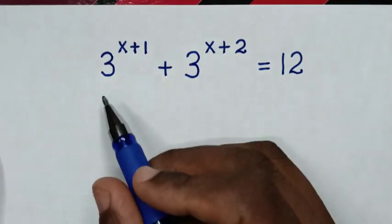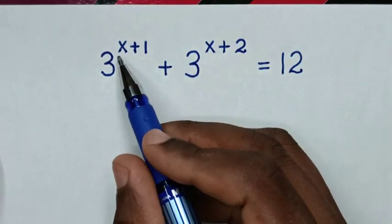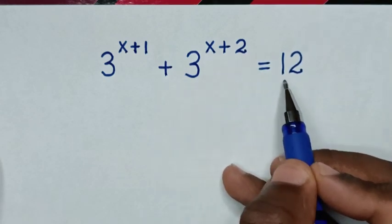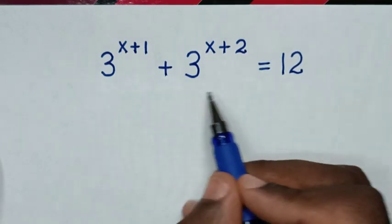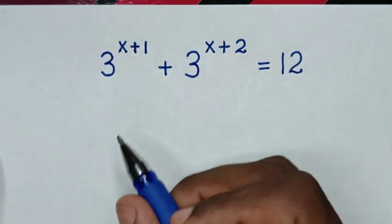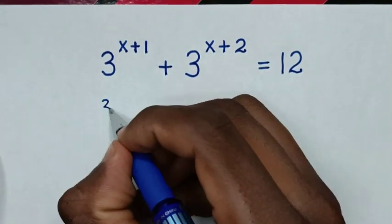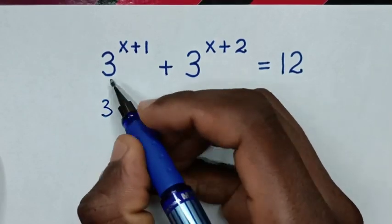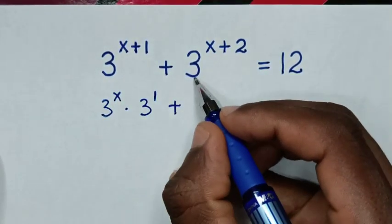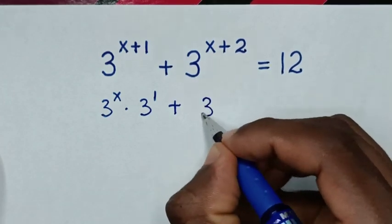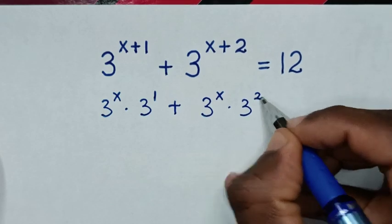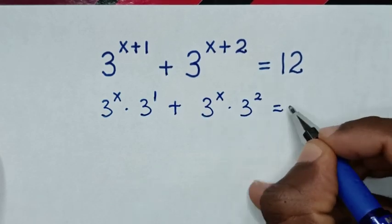Hello. How to solve 3 power of x plus 1 plus 3 power of x plus 2 is equal to 12 — to find the value of x from this equation. From this, using exponent rules: 3^(x+1) is the same as 3^x times 3^1, plus 3^(x+2) is the same as 3^x times 3^2, is equal to 12.